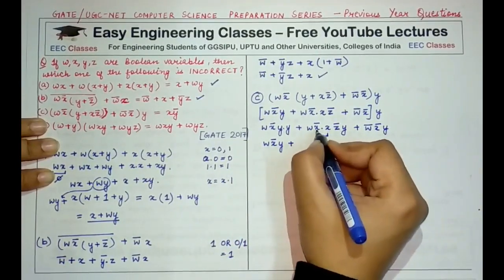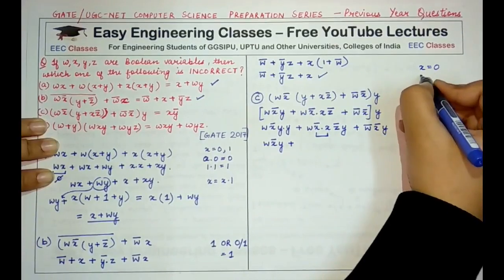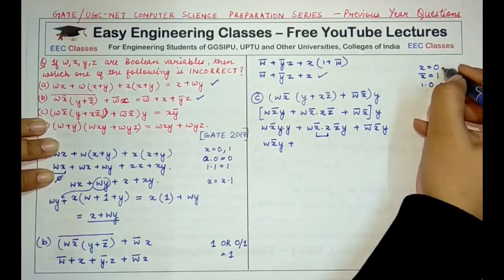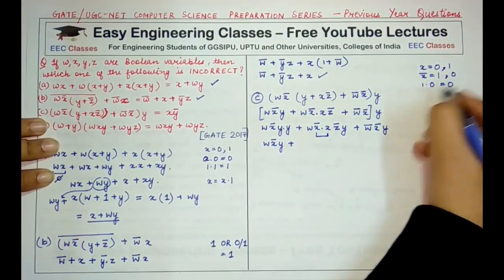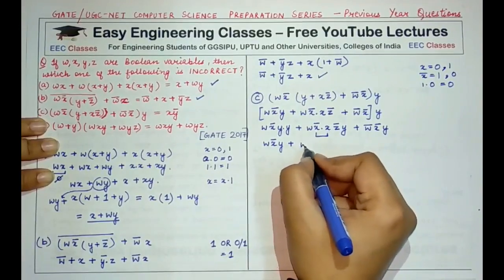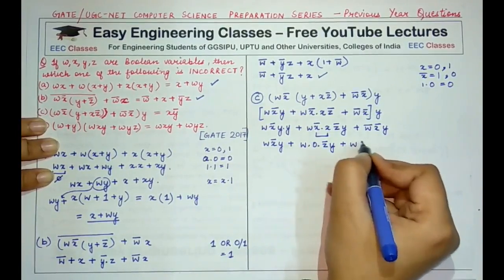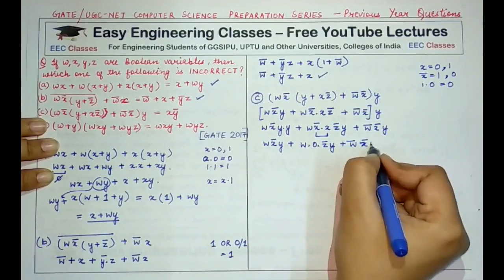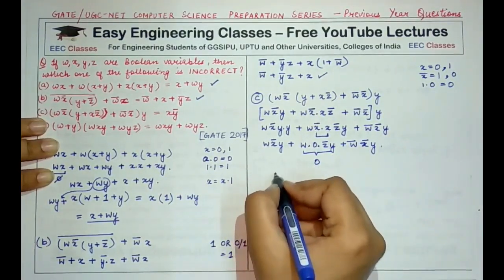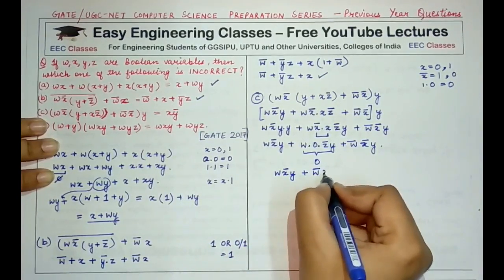Note that y·y = y. Also, x·x̄ always equals 0: if x=0 then x̄=1 and 0·1=0; if x=1 then x̄=0 and 1·0=0. So the middle term reduces to w·0·z̄·y = 0. The expression simplifies to wx̄y + w̄x̄y.